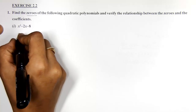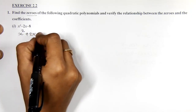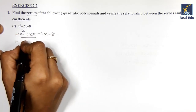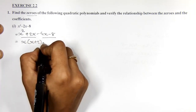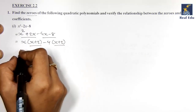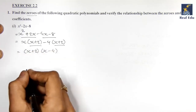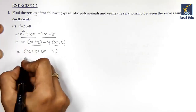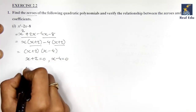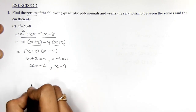First we will find out the zeros of the polynomial. This can be written as x squared, split as plus 2x minus 4x minus 8. Taking common from both terms: x is taken as common giving x plus 2 in the bracket, minus 4 is taken common giving x plus 2. So we get (x+2)(x-4). From this we get two values: x plus 2 equals zero giving x equals minus 2, and x minus 4 equals zero giving x equals 4. These are the zeros of the polynomial.